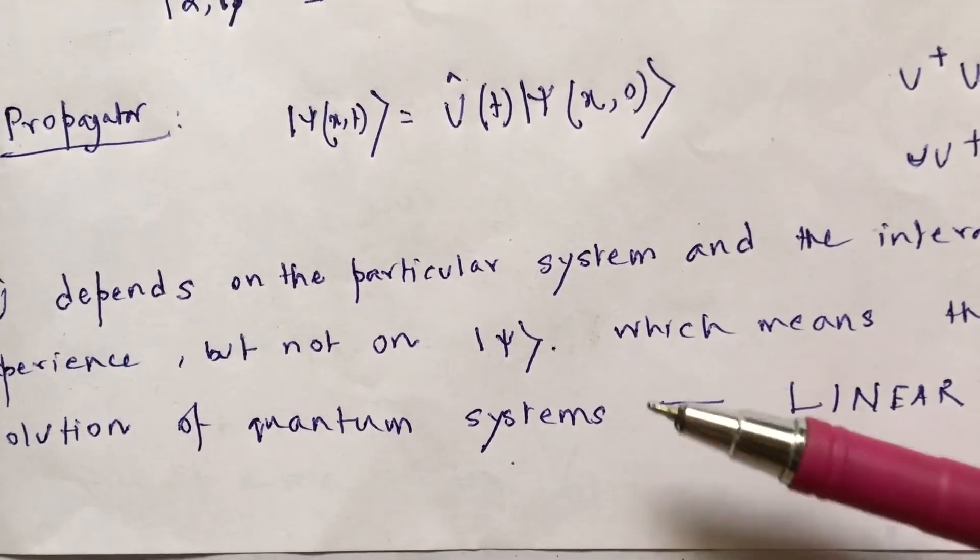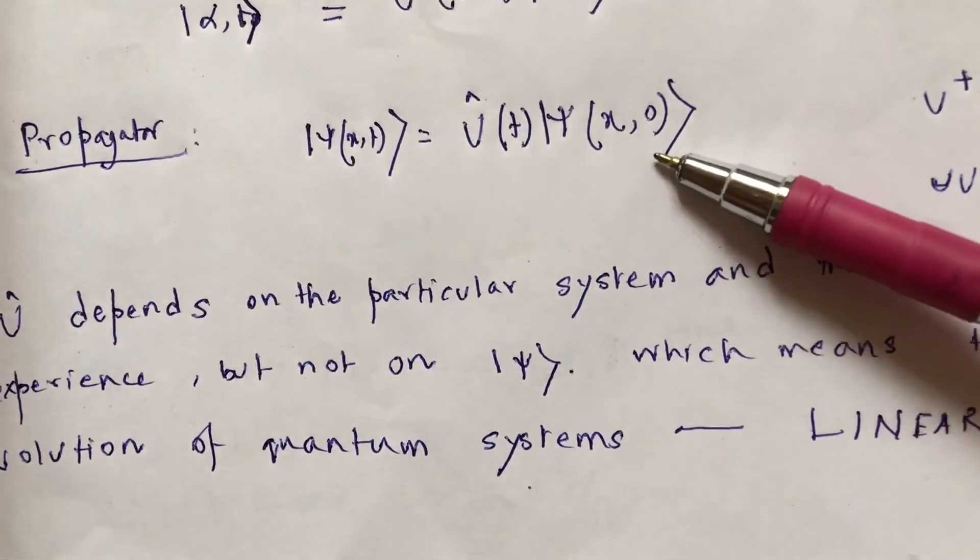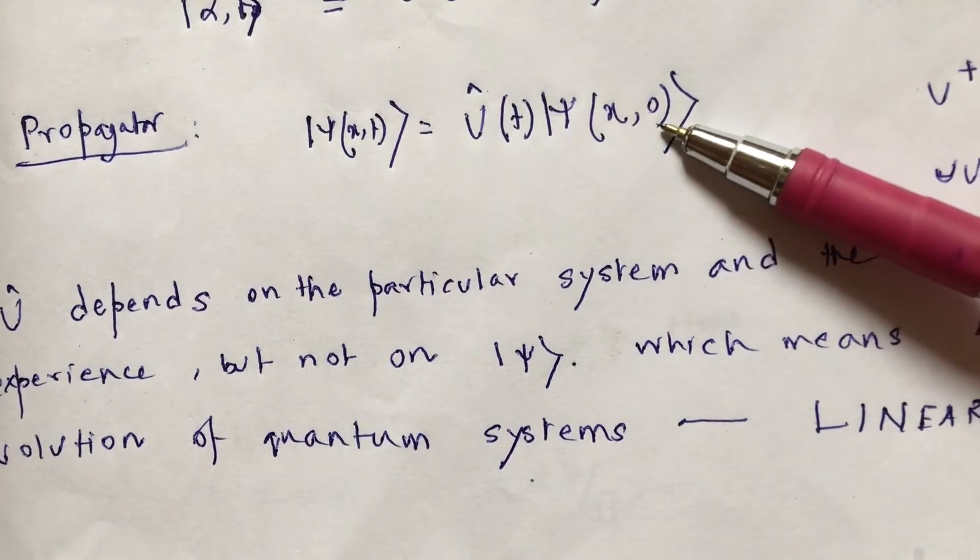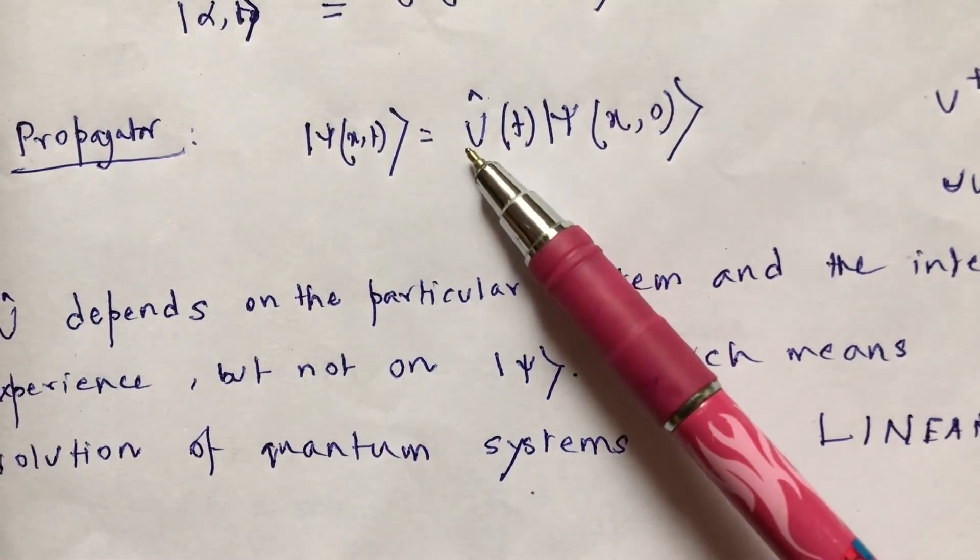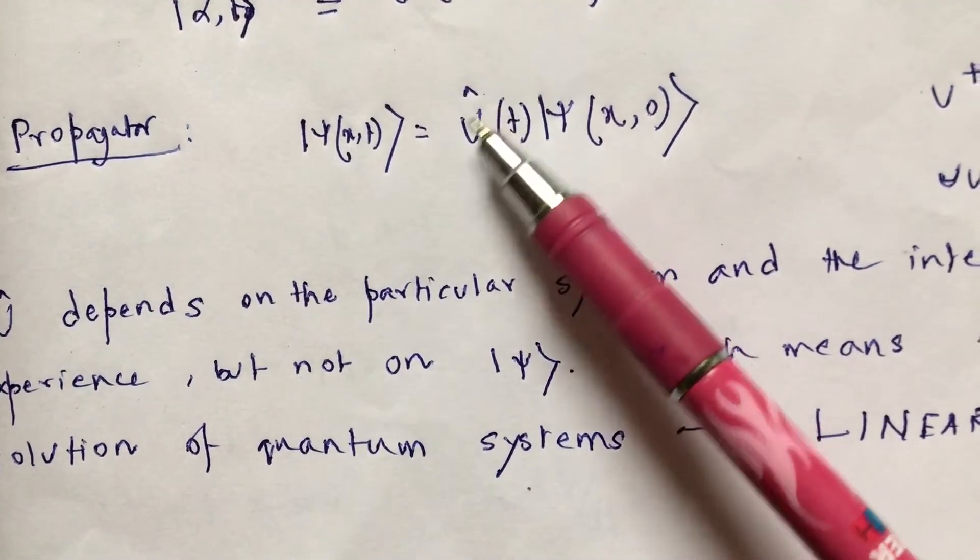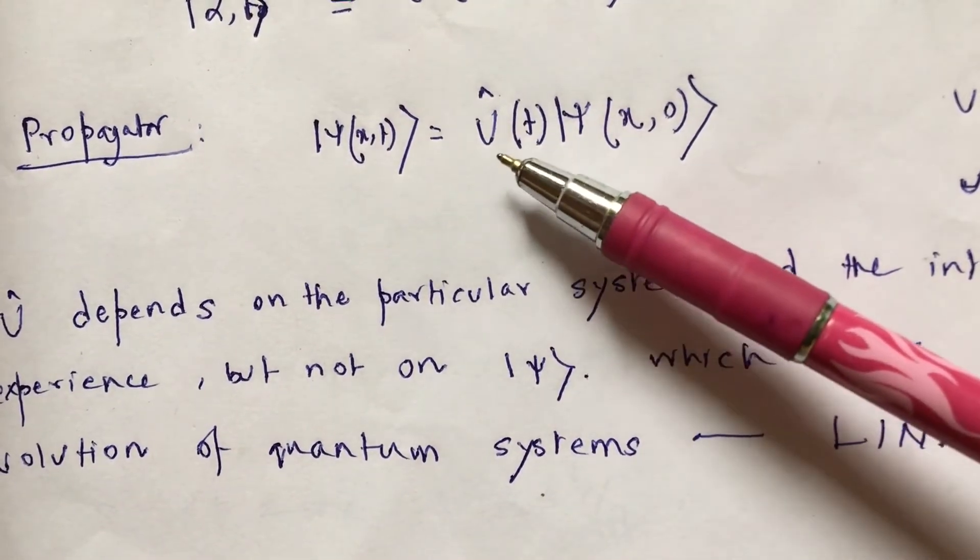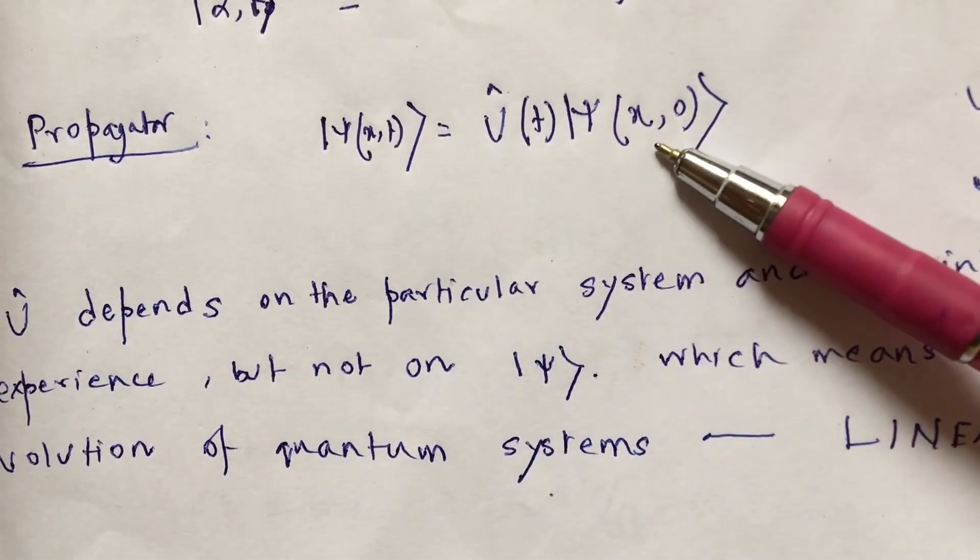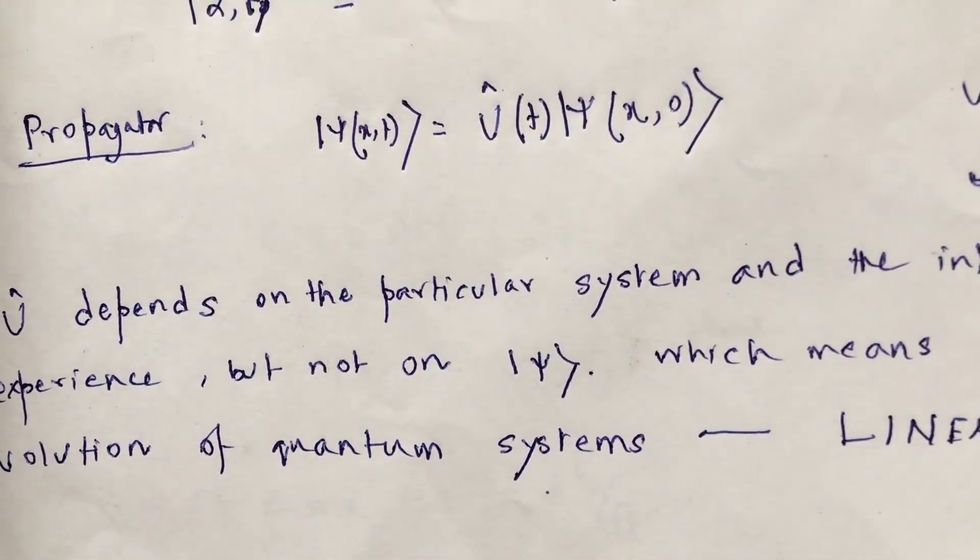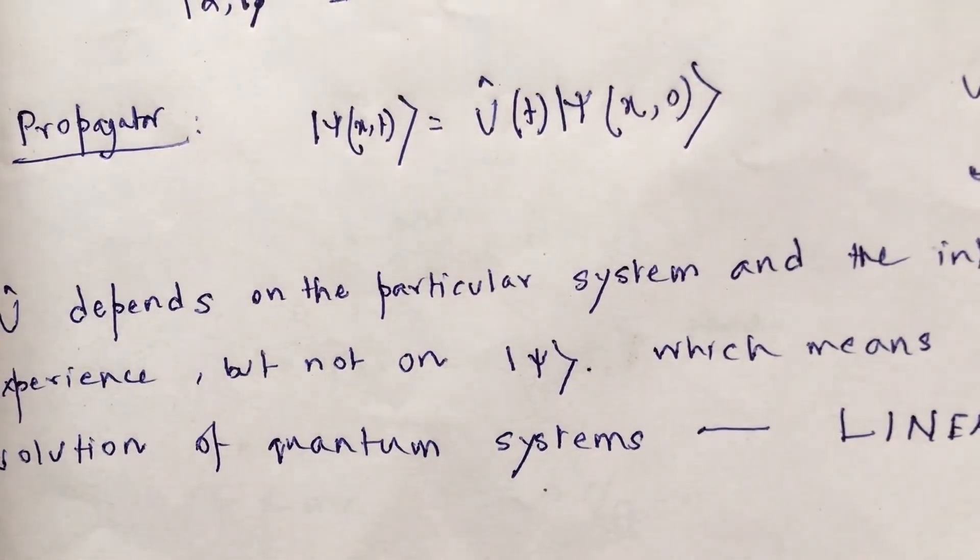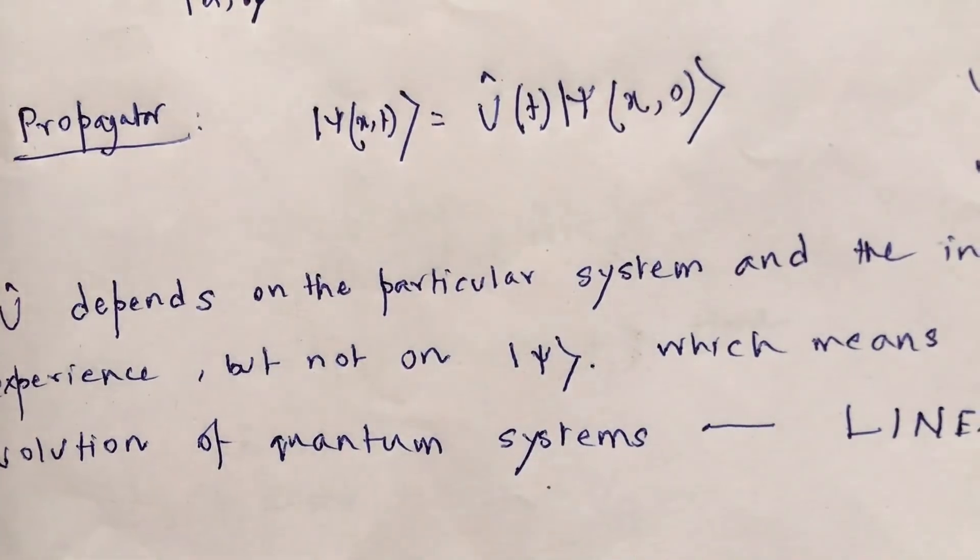So if initially, suppose at t equal to 0, when the measurements are just started, suppose the state is then chi x0, here t equal to 0, and when we apply this time evolution operator u, remember we have always used this hat on top of the operator to denote that it is an operator indeed. So this time evolution operator operating on this initial state chi x0 gives me chi xt, after a certain time t and this u operator is called propagator.